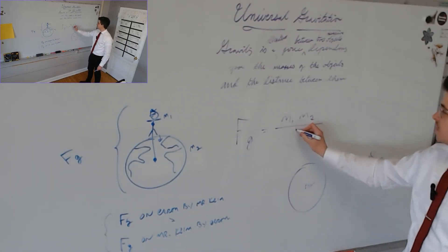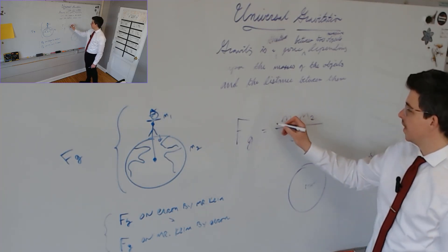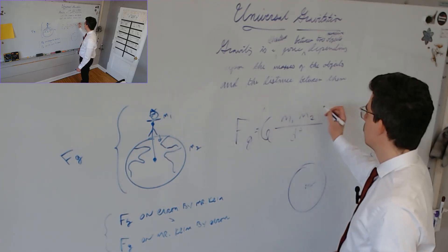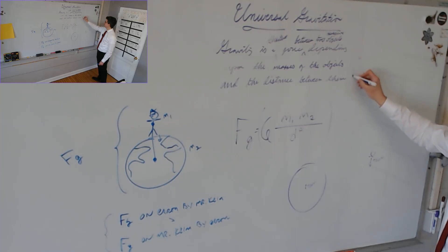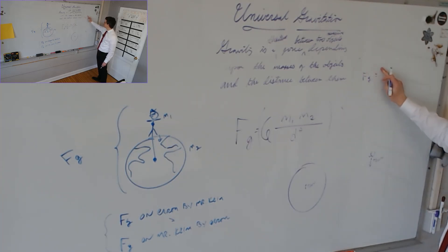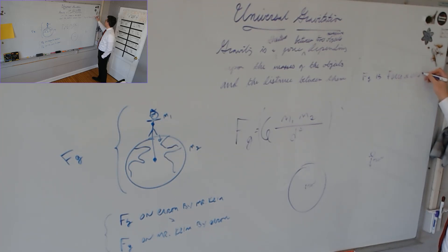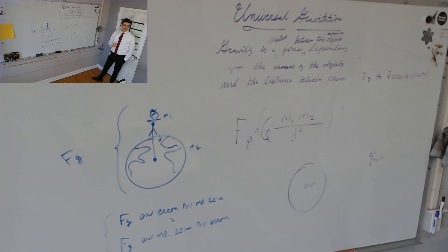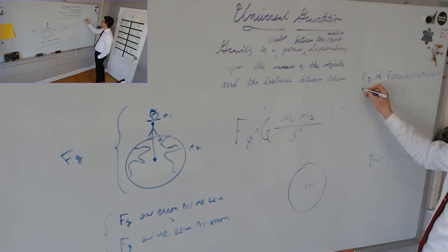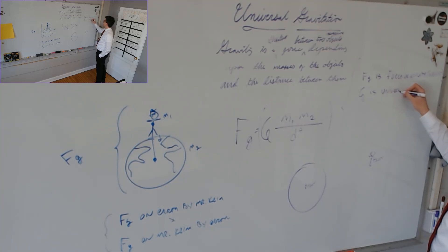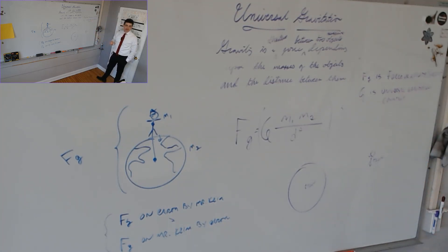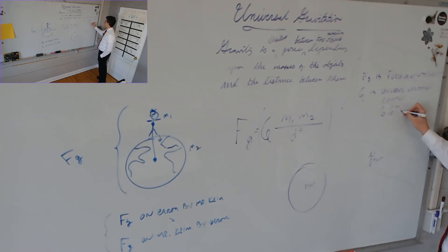This works for any two massive objects as long as we know their masses and the distance between them. We multiply all of this by a factor of G. F sub G is the force of gravity — also called weight in a particular gravitational field. Capital G is the universal gravitation constant, 6.67 times 10 to the negative 11th.